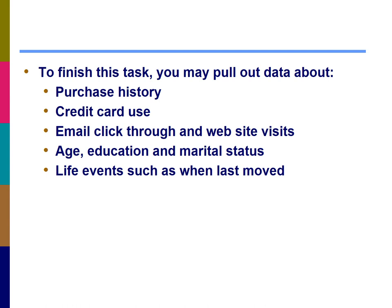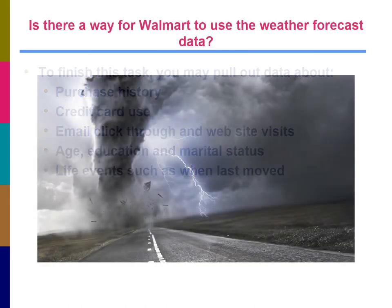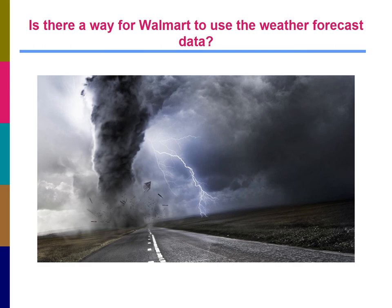To answer questions like this, marketers can pull data such as consumers' purchase history, credit card use, email click-throughs, website visits, demographics like age, education and marital status, and important life events such as when they last moved, weddings, and graduations. Walmart even uses weather forecast data — once they know a hurricane will hit an area, they prepare more bottled water, flashlights, and other supplies for consumers to purchase before the hurricane arrives.